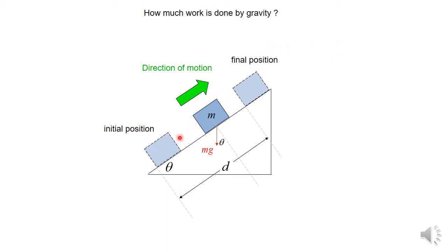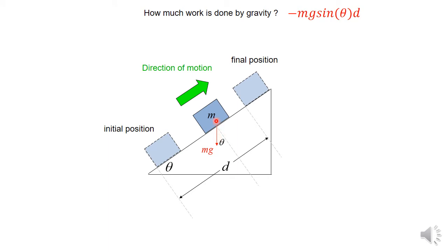What if the situation is reversed — you throw the block up initially with some speed so that it goes up the inclined plane and reaches a final position higher up? The work done by gravity during this motion is minus mg sine theta times d, because the direction of the force is opposite to the direction of motion.